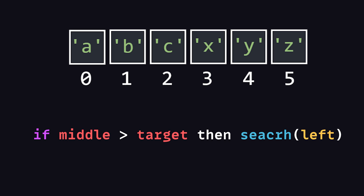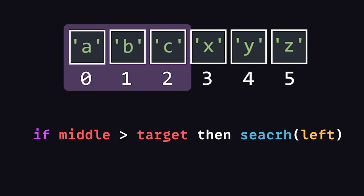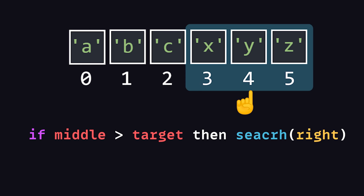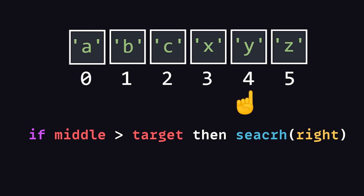But if that element is greater than the target, then we know the target must be somewhere on the left. So we find the middle of that slice of the array. But if it's less than the target, then we know the target is somewhere on the right. So we repeat the process for that slice of the array.